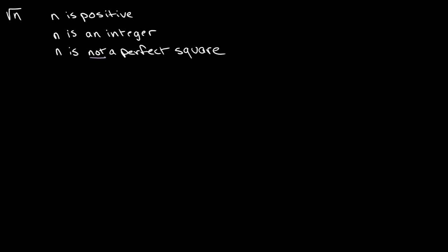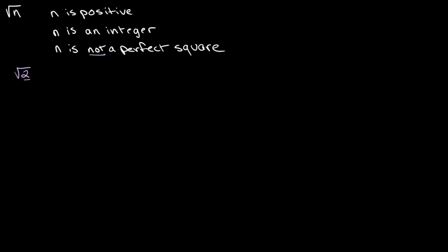For example, we can say that the square root of 2 is a surd because 2 is positive, it is an integer, and it is not a perfect square. However, we cannot say that the square root of 16 is a surd because 16 is a perfect square and we can simply rewrite this as 4.